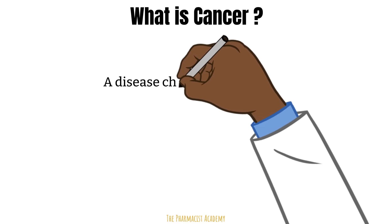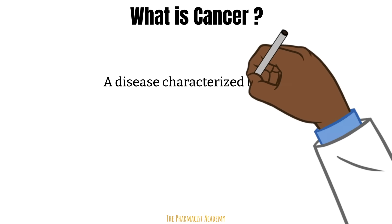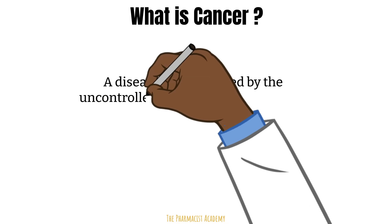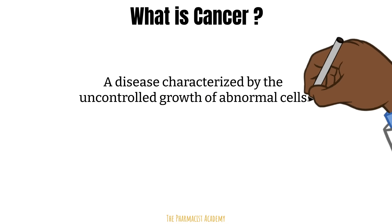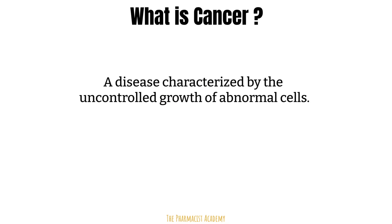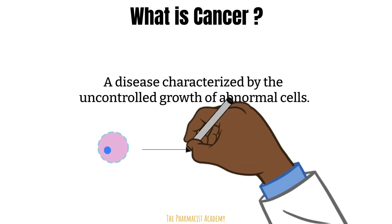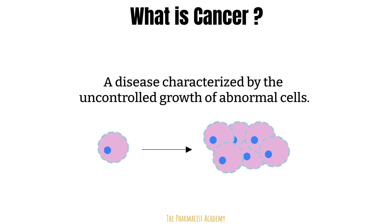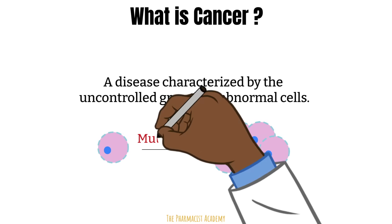By definition, cancer is a disease characterized by uncontrolled growth of abnormal cells. The keywords here are uncontrolled growth, which doesn't necessarily refer to the cell getting bigger in size, but instead an increase in the numbers without anything stopping it. This occurs because the cell is abnormal or mutated.